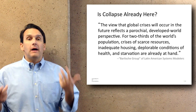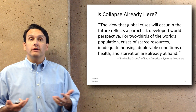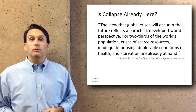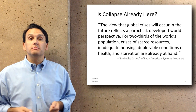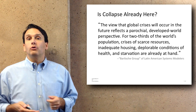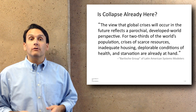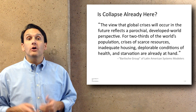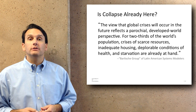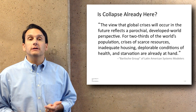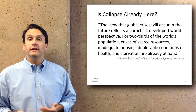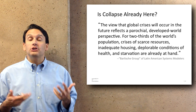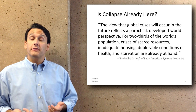From our position in the industrial world here in the US, it may seem like collapse is quite a ways away. But a group of systems modelers has suggested that the view that global crises will occur in the future reflects a parochial developed-world perspective. For two-thirds of the world's population, crises of scarce resources, inadequate housing, and deplorable conditions of health and starvation are already at hand. This suggests that people in the developed world potentially have a narrow point of view.